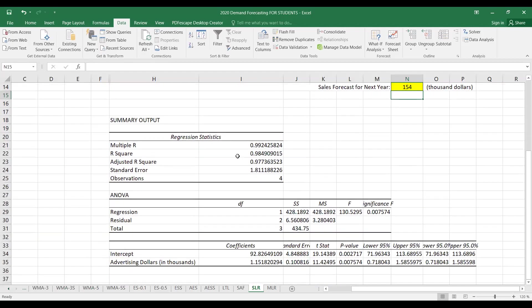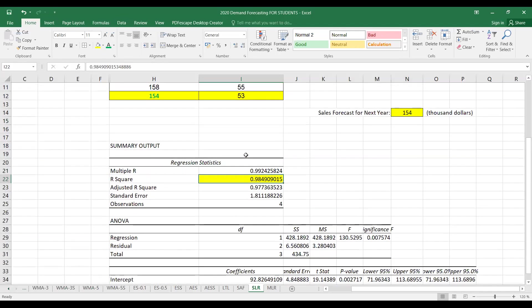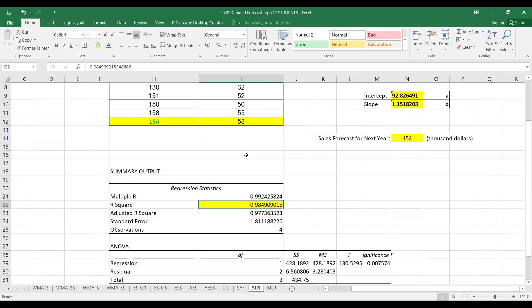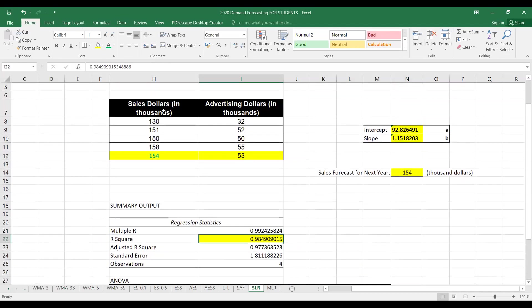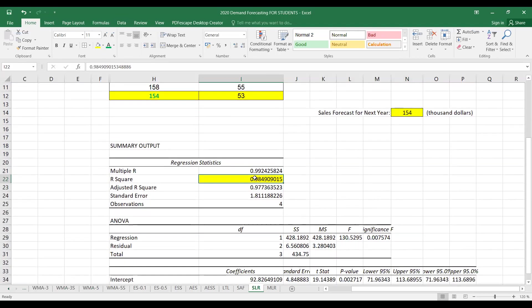We can get some more information using this method. For example, R square here is 0.98, so that is quite high value. This is a very strong model. We can actually predict the sales for the future using the data for amount spent on advertisements.